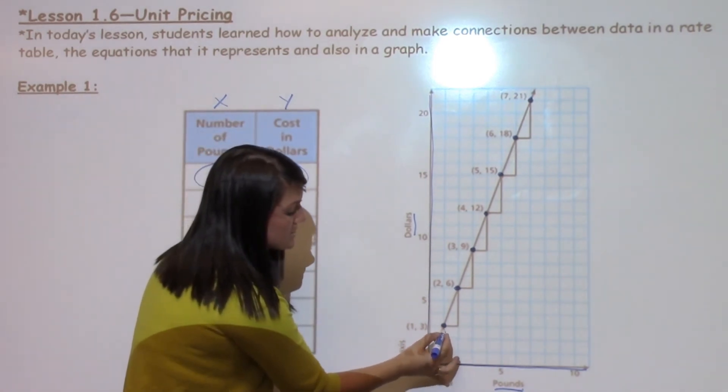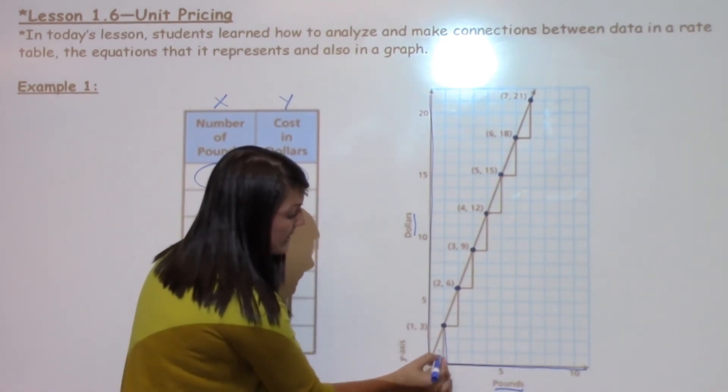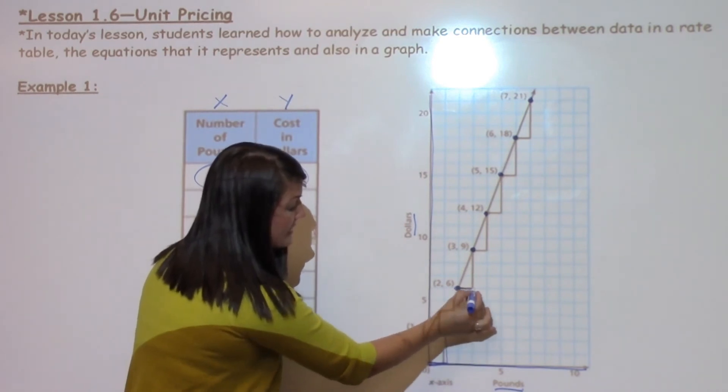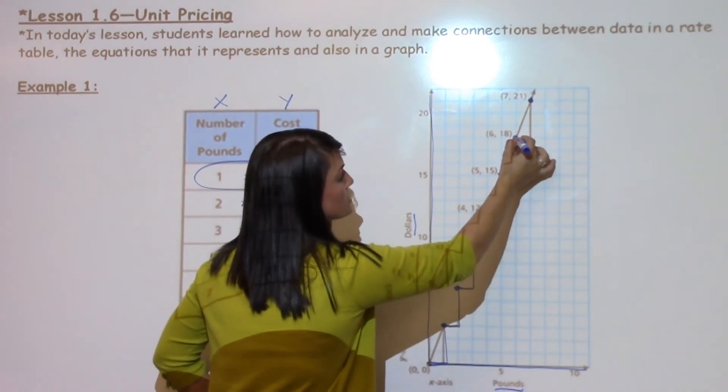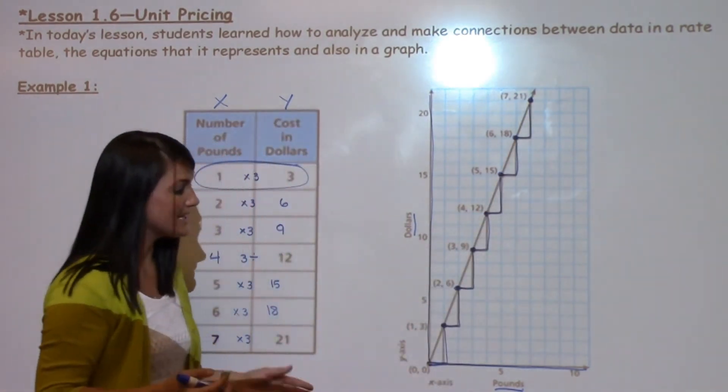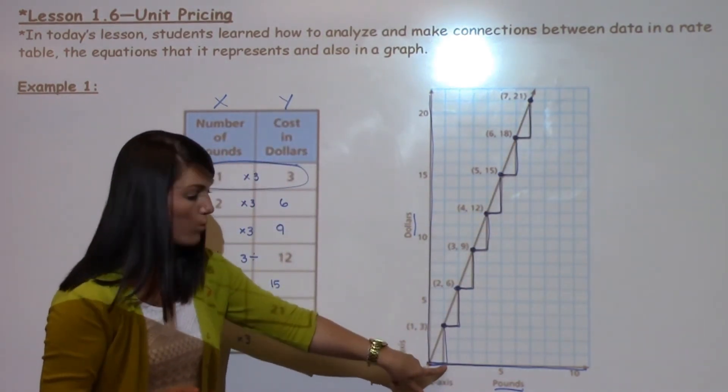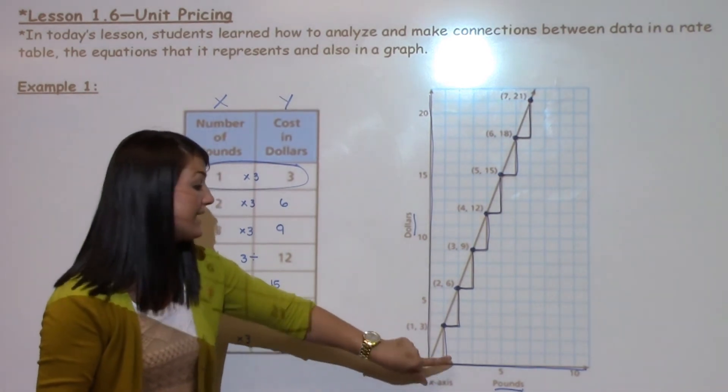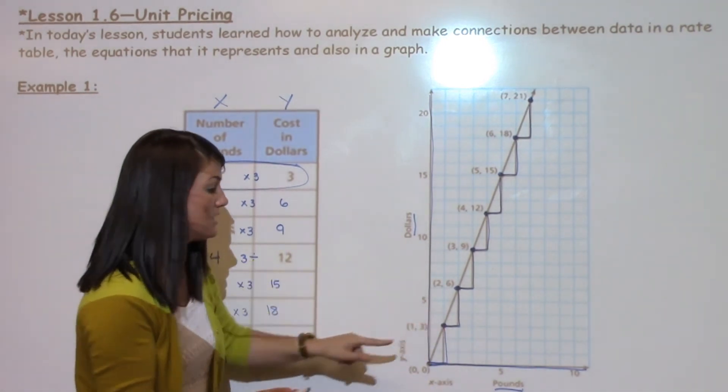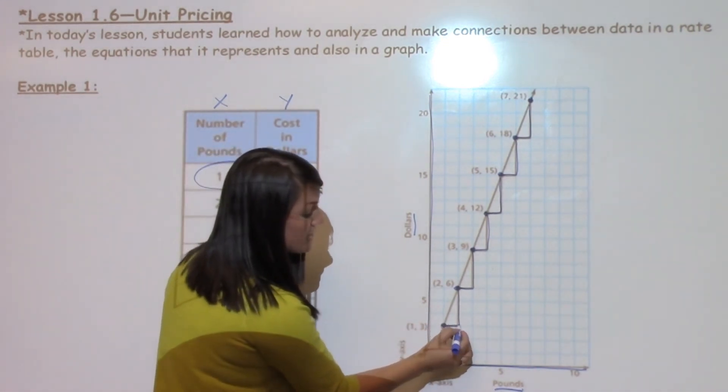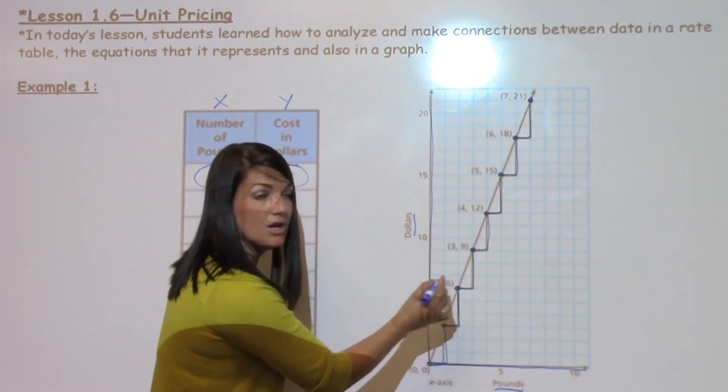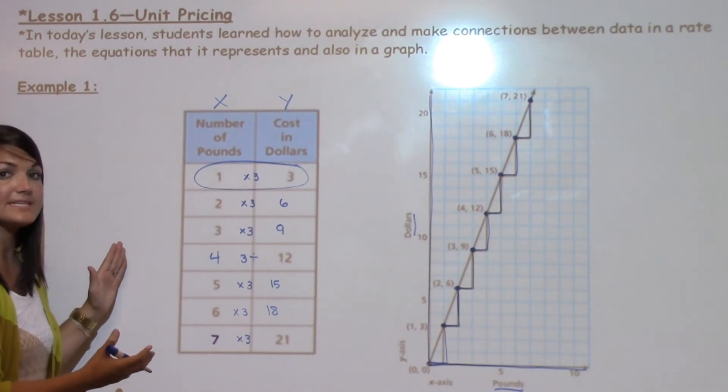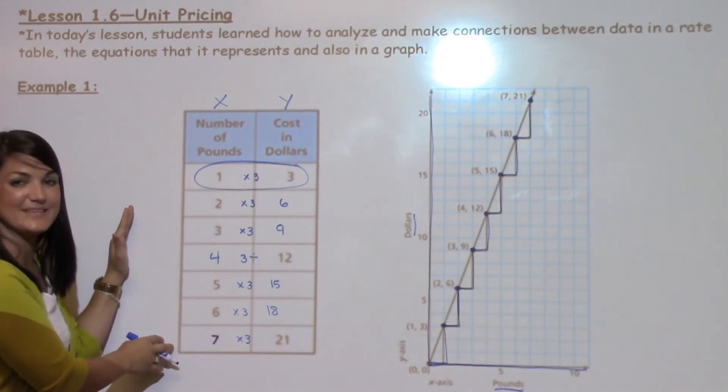Another term that students learned today was a unit rate triangle, which you'll see me highlighting here on my graph. It goes all the way up. What this unit rate triangle shows, it shows that a number is getting bigger by 1 pound and bigger by $3. So every triangle shows an increase over by 1 and an increase up by 3, which is just reemphasizing the pattern that we see in the rate table.